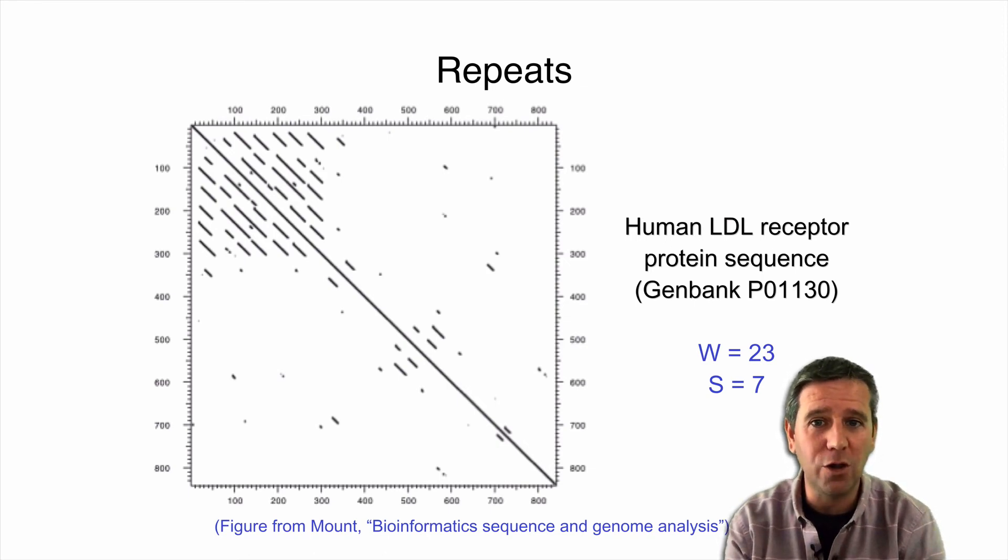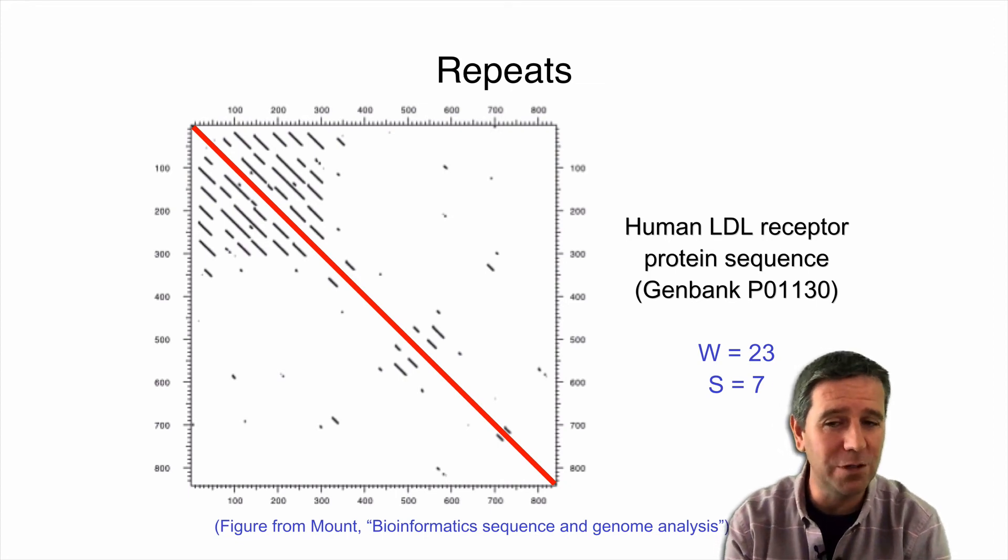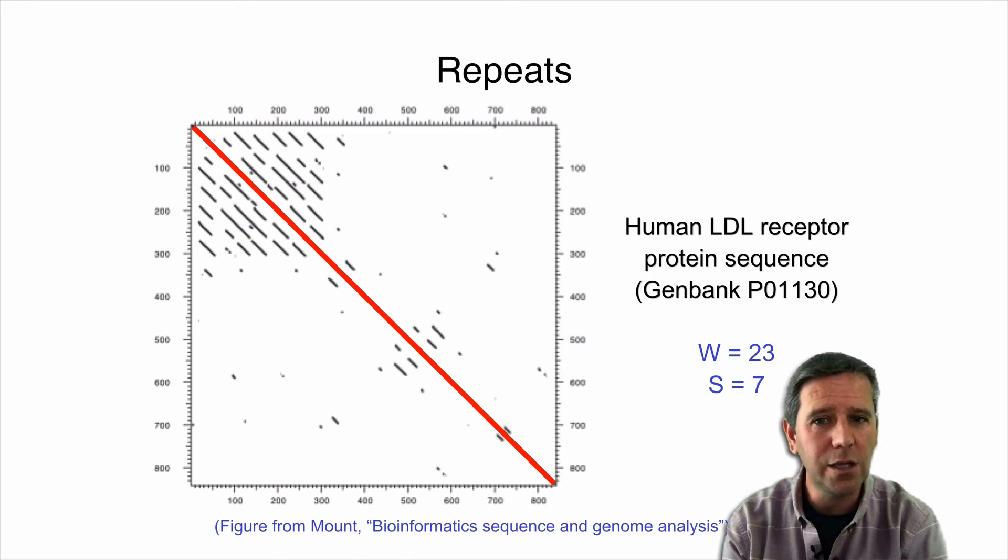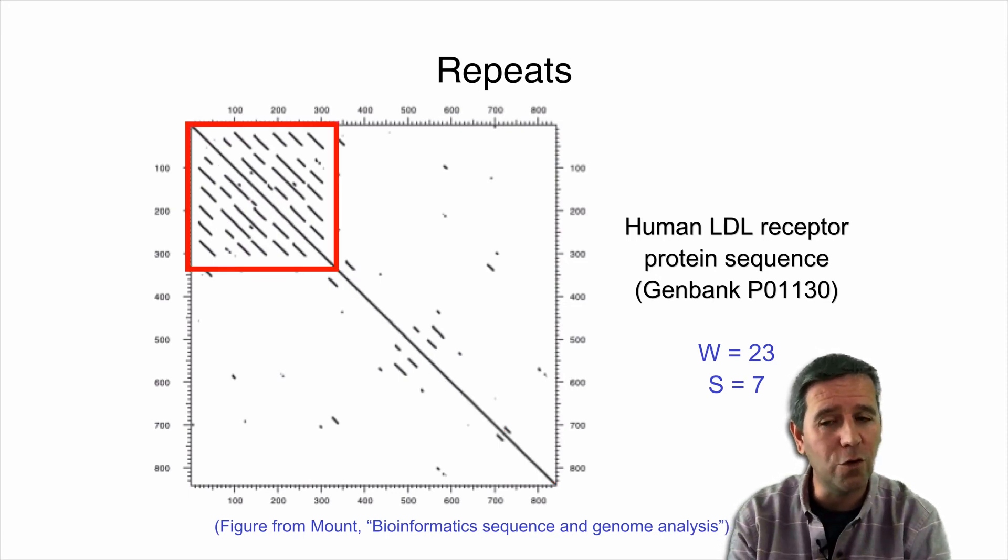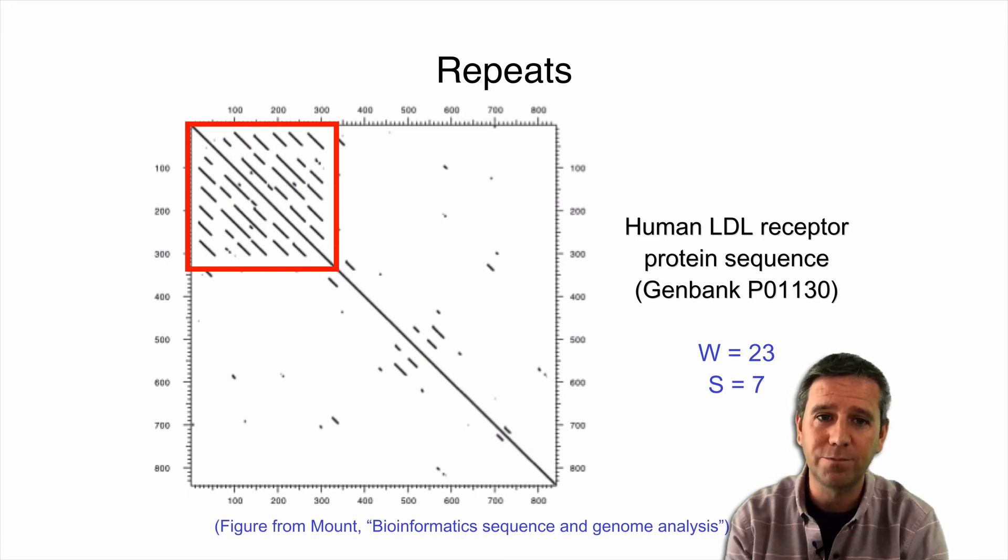we can see this kind of banding pattern. See these runs, these diagonal runs that are off the main diagonal? These are indicative of repetitive subsequences within this longer sequence that we're comparing. Particularly if you note, if your eyes can note this region here, this quadrant, if you will. Well, these are the repetitive subsequences present many times within the main sequence. Let's examine one.